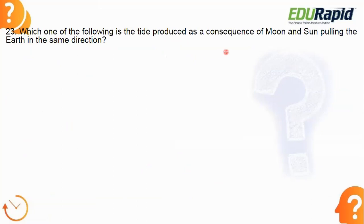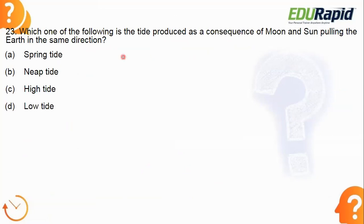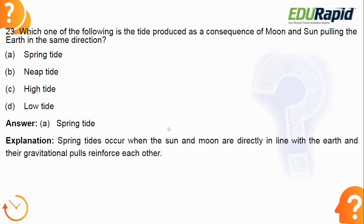Next: which tide is produced as a consequence of the moon and sun pulling the earth in the same direction? The answer is the spring tide. Spring tides occur when the sun and moon are directly in line with the earth and their gravitational pulls reinforce each other, causing stronger tides.